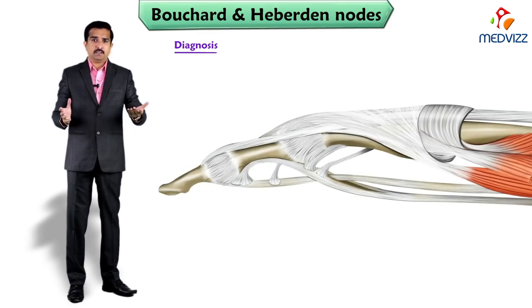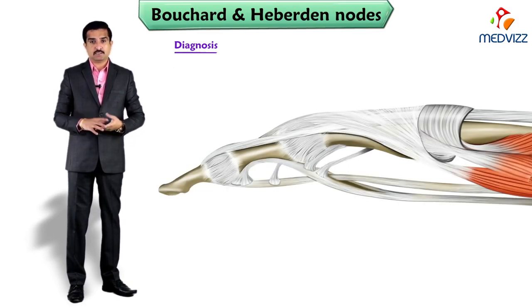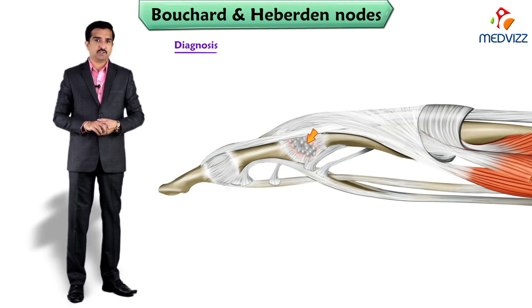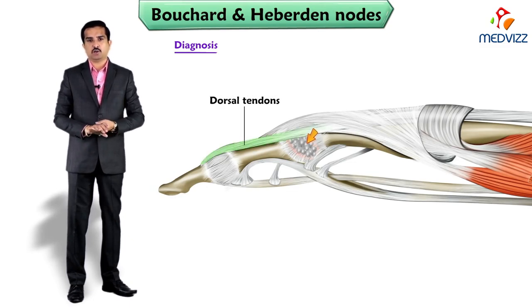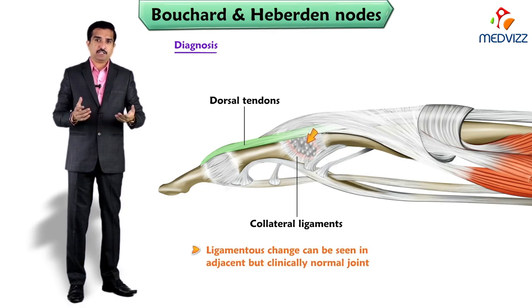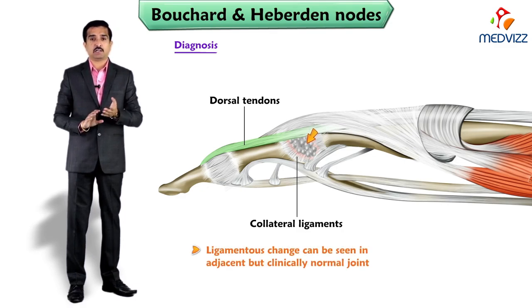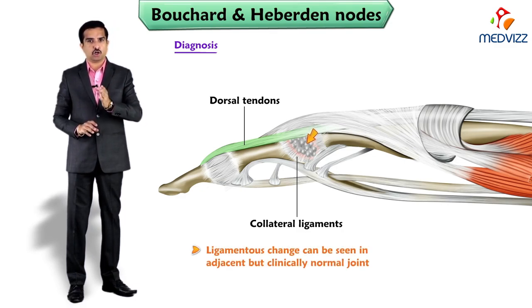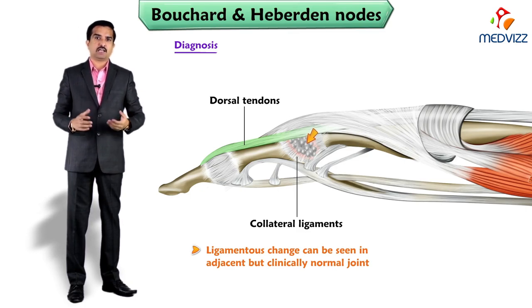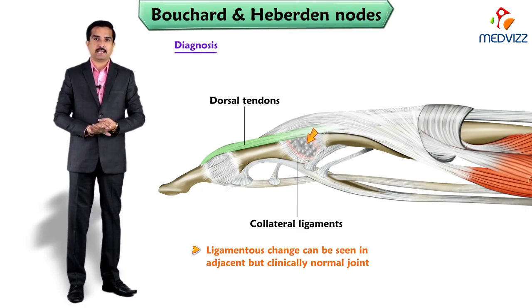Heberden and Bouchard node formation is associated with soft tissue bulging through the capsule between dorsal tendons and collateral ligaments. Ligamentous change can be seen in adjacent but clinically normal joints. This is how you can distinguish between Bouchard and Heberden nodes.